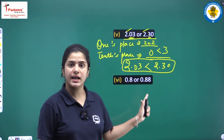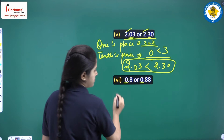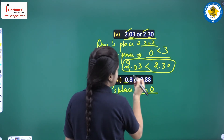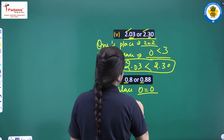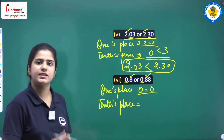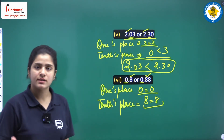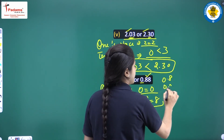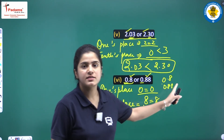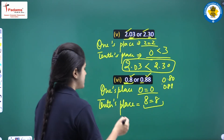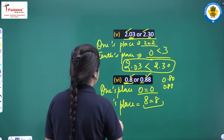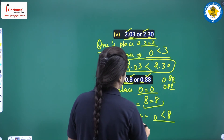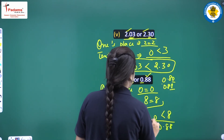Next question: 0.8 or 0.88? Ones place: both are 0, so same. Tenths place: 8 and 8 — also the same. Shift to the hundredths place: for 0.8 there is nothing at the hundredths place, so write 0. For 0.88 it is 8. So at the hundredths place it is 0 versus 8. Since 8 is greater than 0, 0.8 is smaller than 0.88.